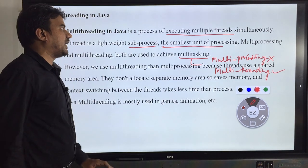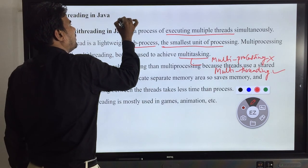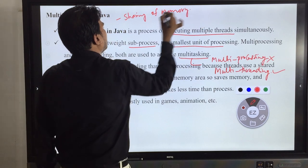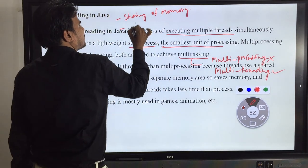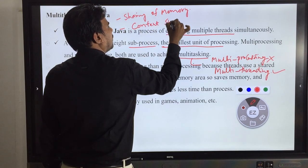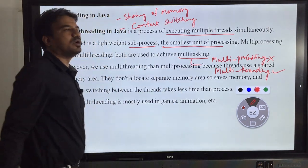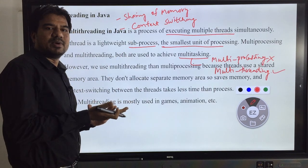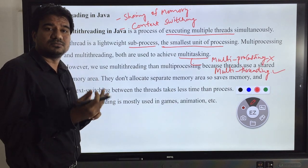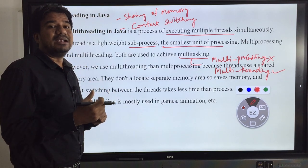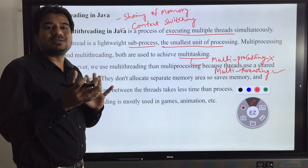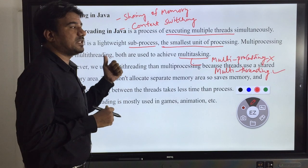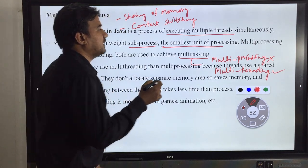Before we go to that concept, we need to know about sharing of memory and context switching. Sharing of memory means: if you are executing multiple processes or multiple threads — in short, if you are trying to achieve multi-tasking — how those tasks or processes are executed in your computer system is very important. Specifically, whether they are allowed to share memory or not.